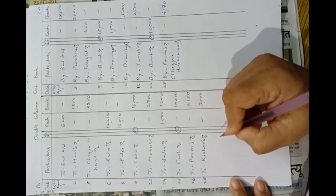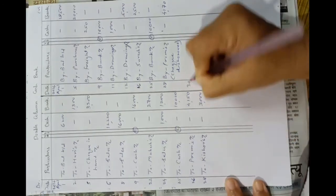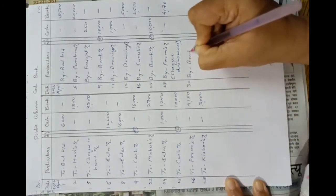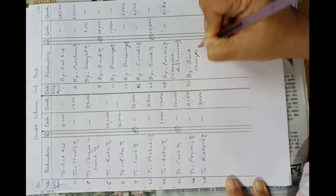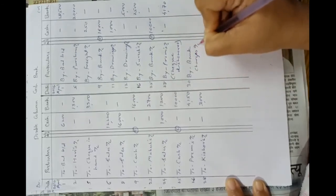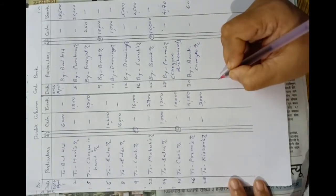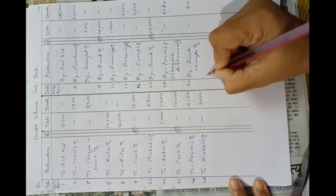On 30th April, bank has charged Rs. 60 for bank charges — by bank charges account. Bank also charged interest on overdraft Rs. 720 — entries made on the payment side in the bank column.